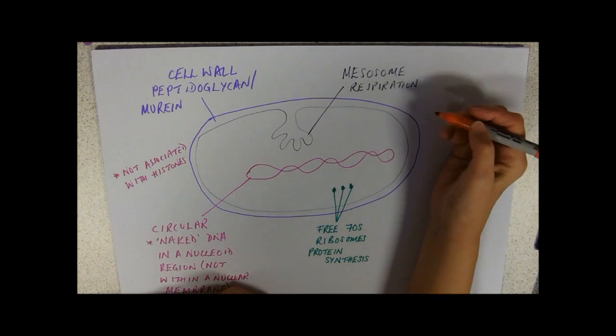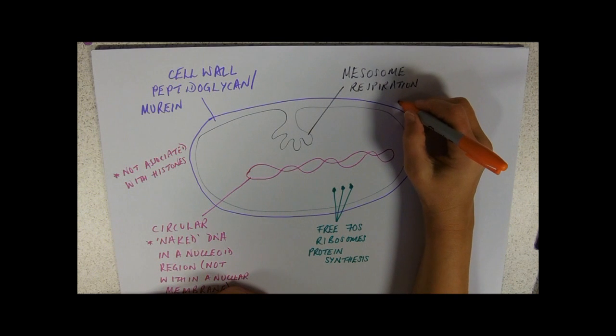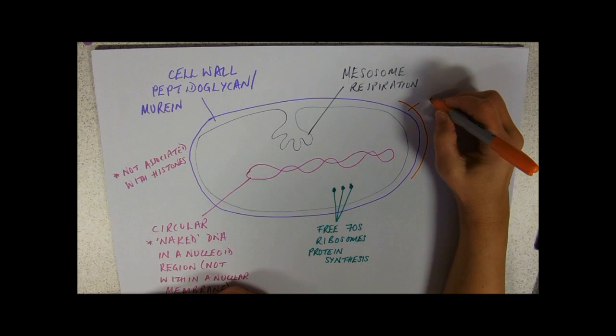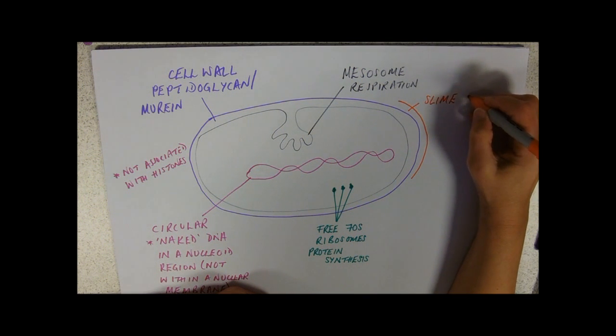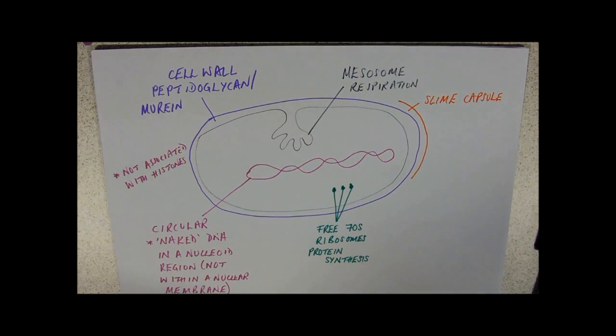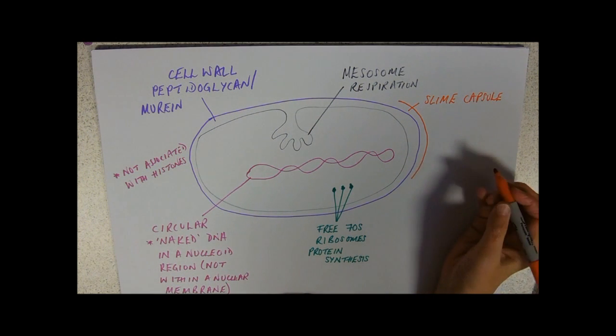I want to draw all my additional features in orange. I saw quite a lot of people referring to the slime capsule. This is a protective thing. It's going to slow down any desiccation going on and do a bit of protection from the immune system of animals.